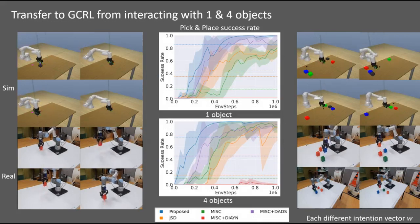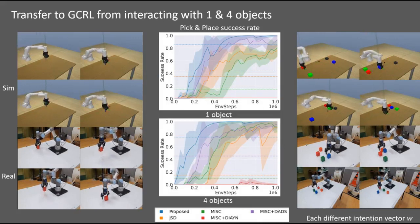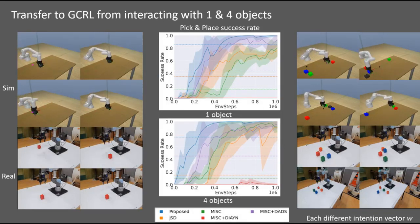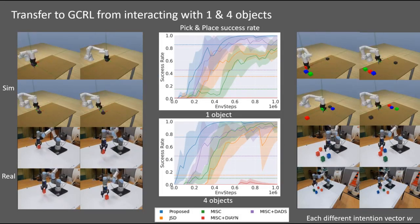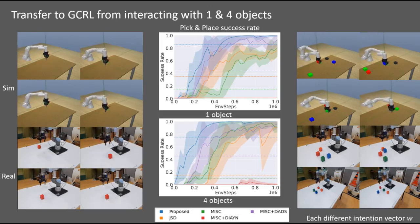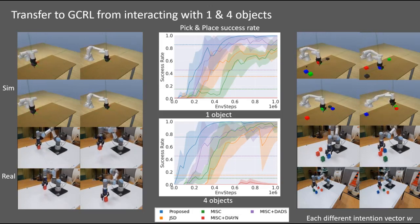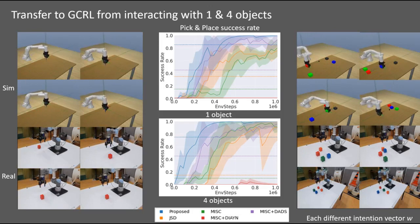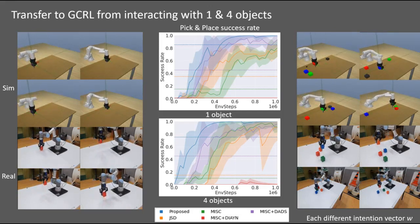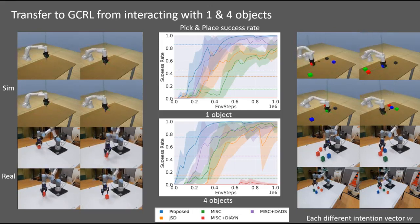After learning how to interact with one object or four objects, we transfer the learned primitives into pick-and-place goal-conditioned RL. For evaluation, we use UR3 robot in simulation and real-world experiments. As the primitives implicitly represent the interaction behavior, the proposed method shows better sample efficiency than others.